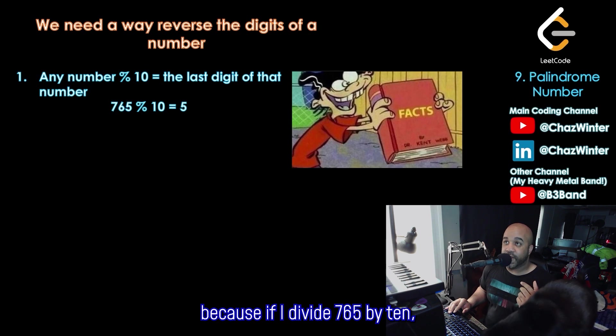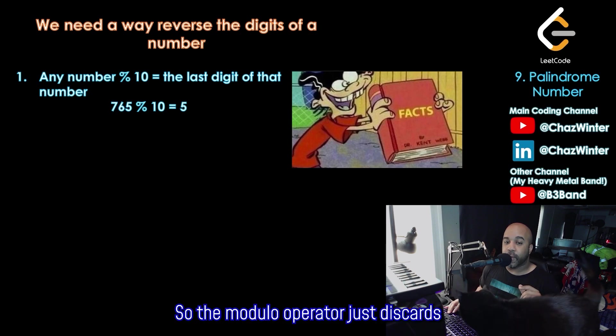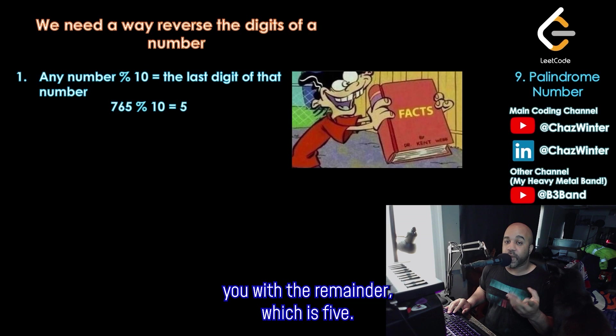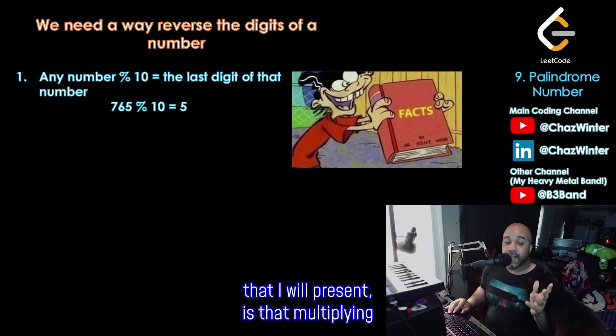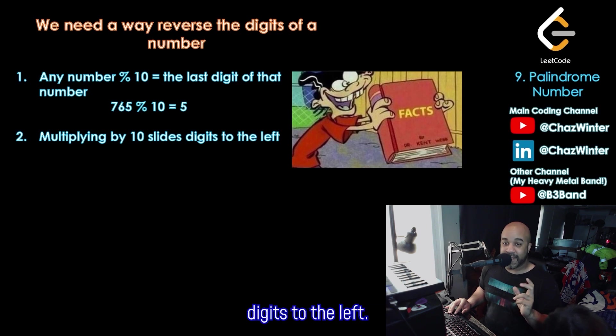and 765 mod 10 is just 5. Because if I divide 765 by 10, I get 76, remainder 5. So the modulo operator just discards the 76 and leaves you with the remainder, which is 5.